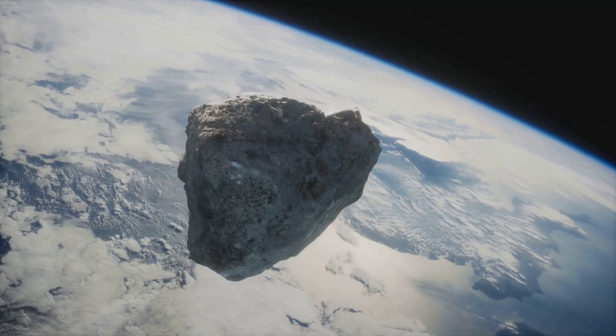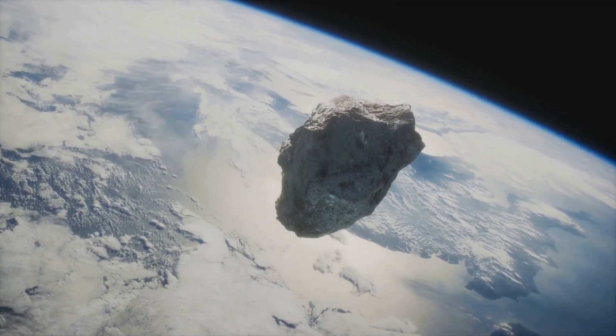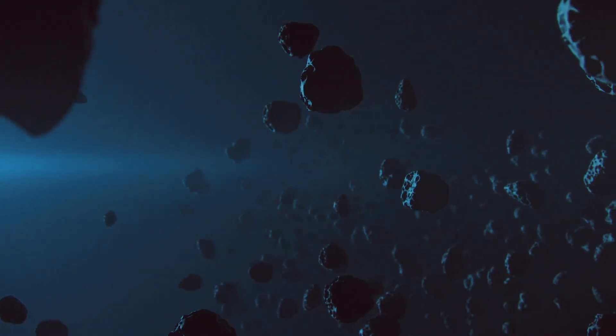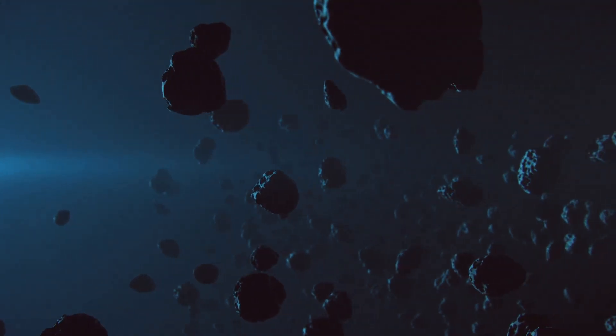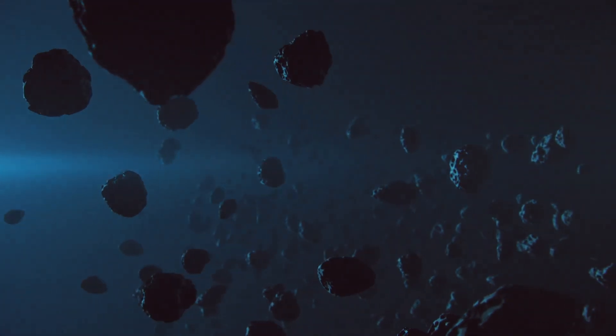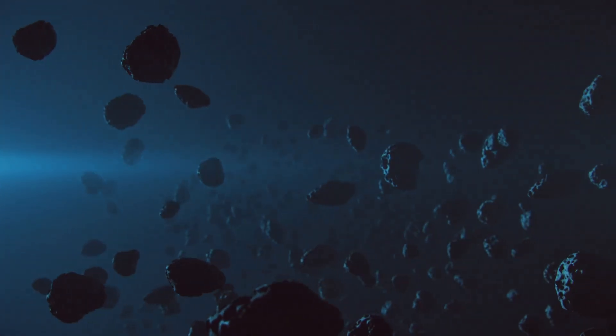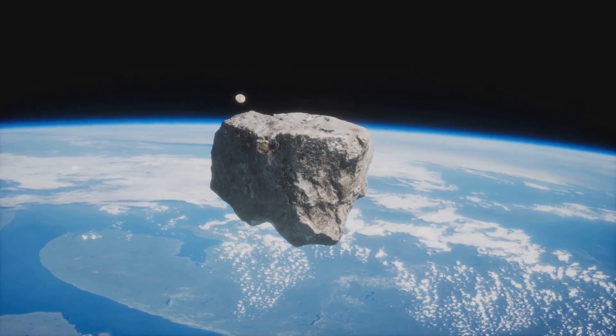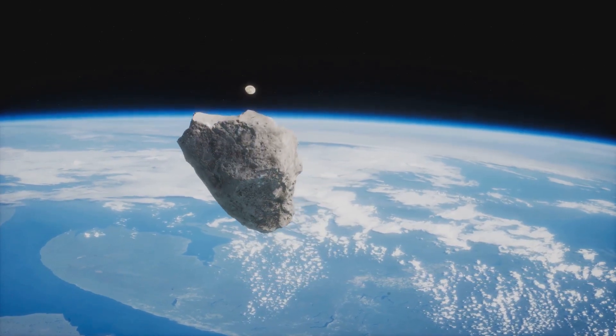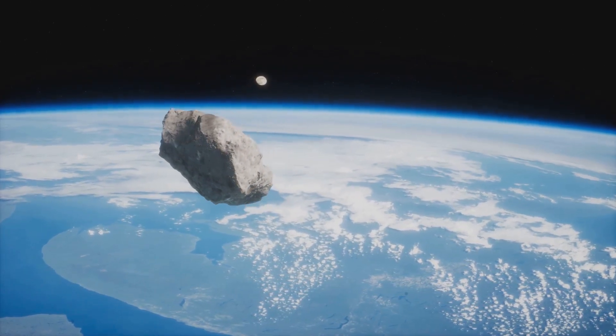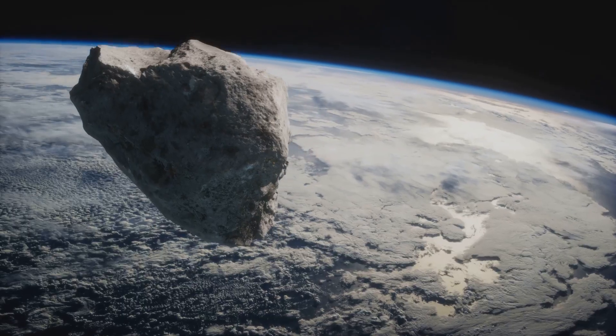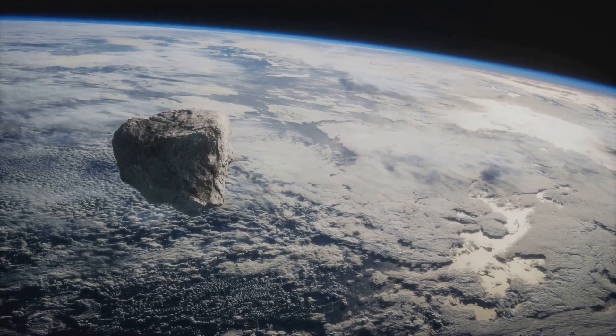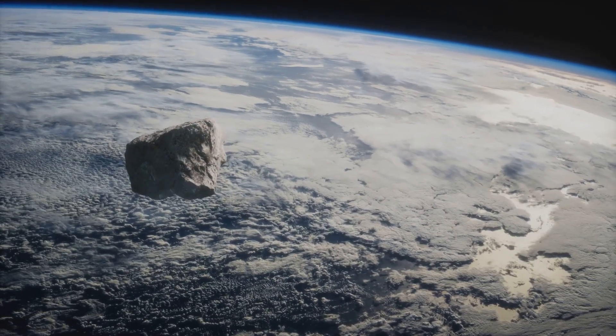But it's not just the big asteroids we have to worry about. Even smaller ones, if they hit the right spot, could cause considerable damage. An asteroid just a quarter of a mile wide, if it hit a city, could wipe it off the map. While asteroid impacts are rare, they have the potential to cause catastrophic damage. It's a sobering reminder of our place in the universe. As we gaze up at the stars, we must also keep an eye out for the dangers that lurk within the cosmos. The universe is vast and full of wonders, but it can also be unpredictable and unforgiving.